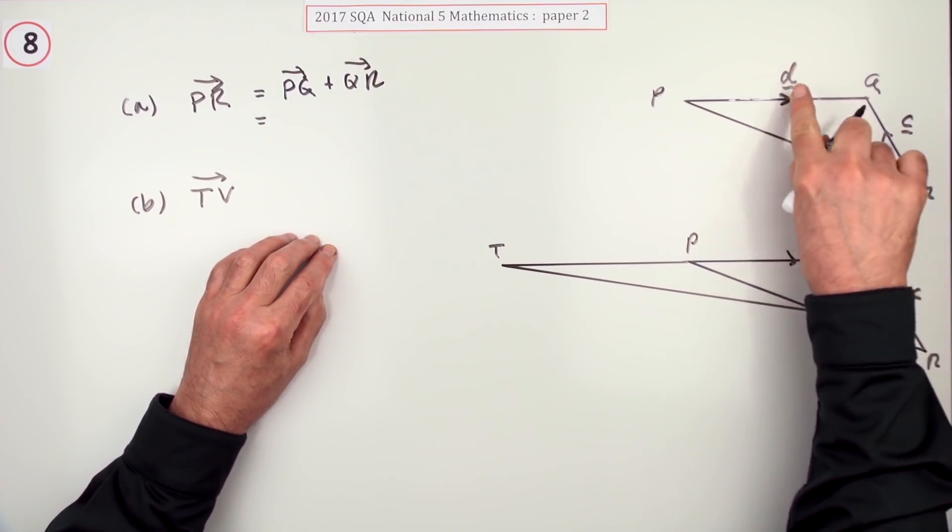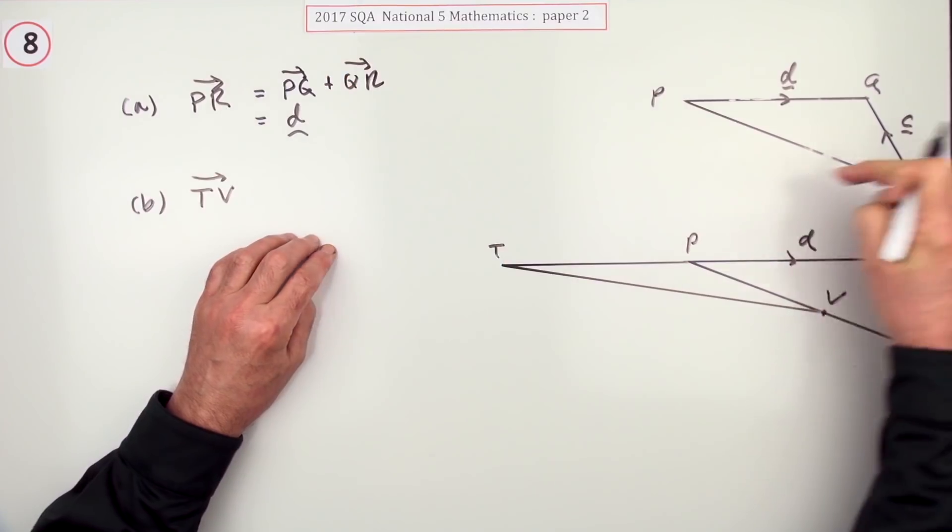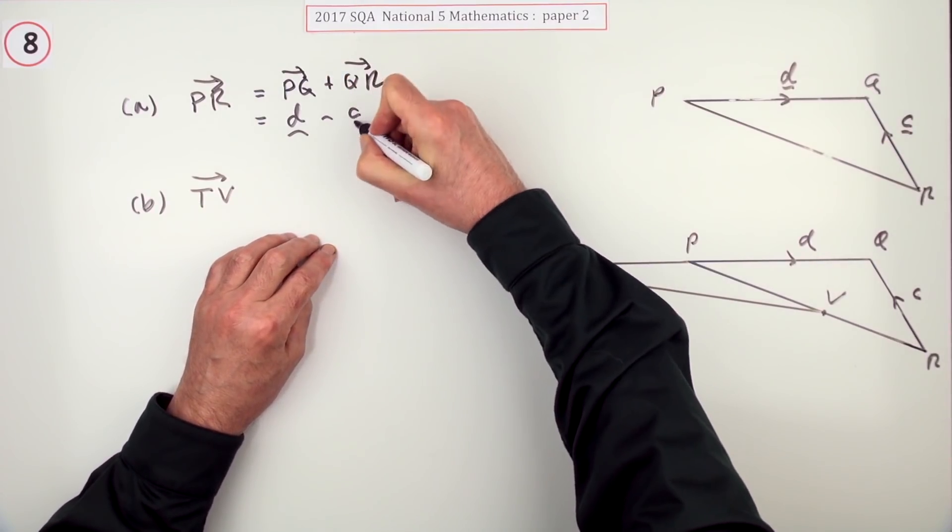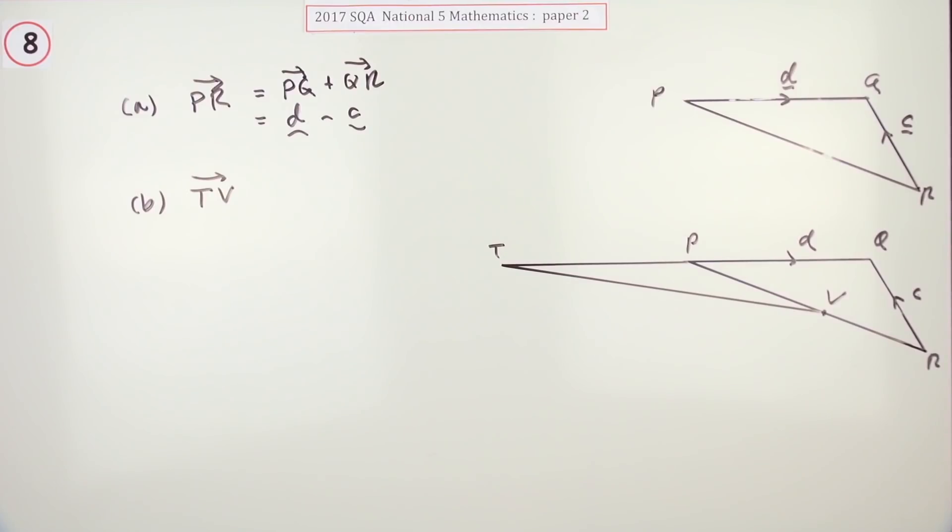Traveling along PQ is with d, but traveling from Q to R is going against c, so that would be the answer.